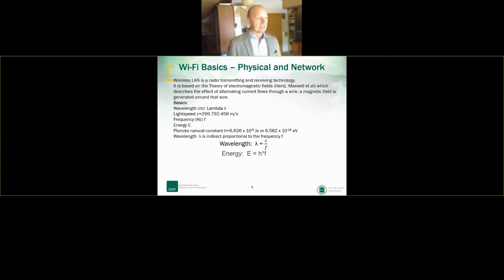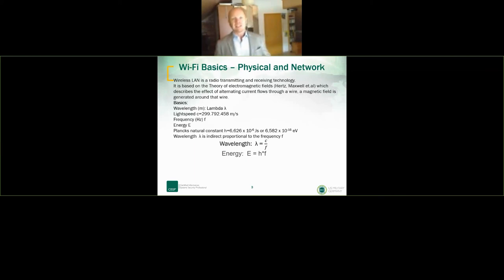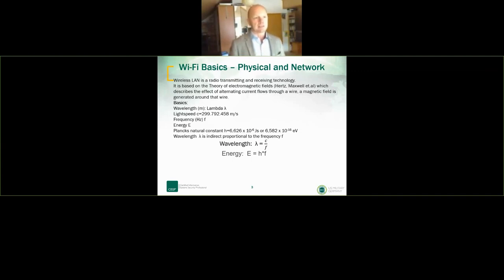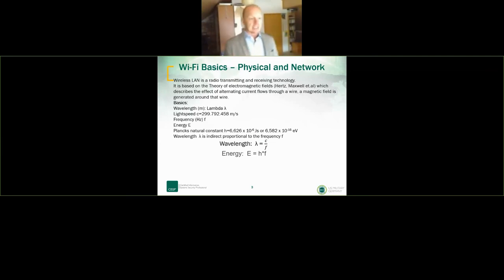There are a couple of basics here. We talk about wavelength, measured in meters and denoted lambda. The electromagnetic speed is the speed of light. We use frequency energy with Planck's constant, and there are relationships between these physical measurements — for example, wavelength equals C divided by F, and energy is calculated from frequency using Planck's constant.